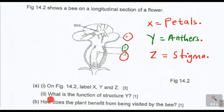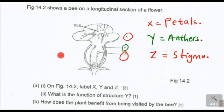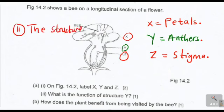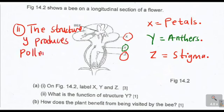Let us now move on to question A2: what is the function of structure Y? Structure Y is the anthers — the male reproductive organs — and their main function is to produce pollen grains. So for A2, the structure Y produces pollen grains. These pollen grains are being transferred from the anthers to the stigma through the process called pollination.